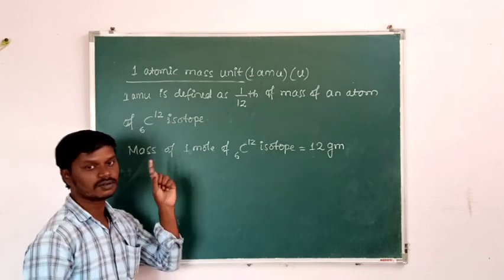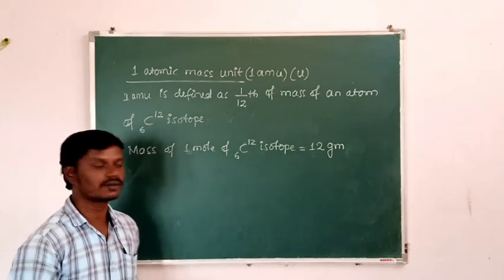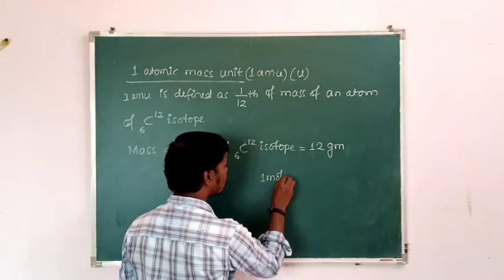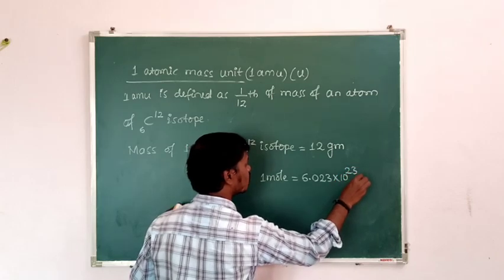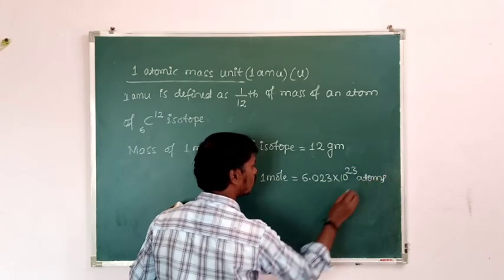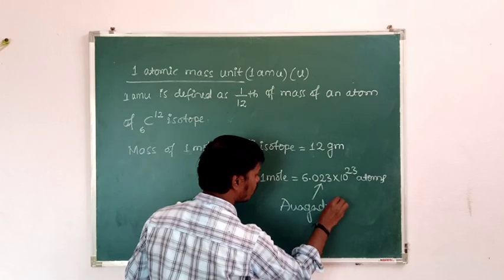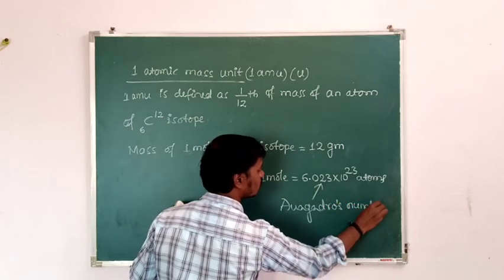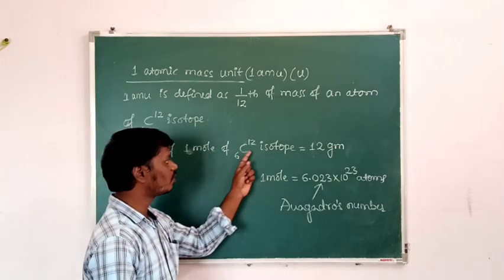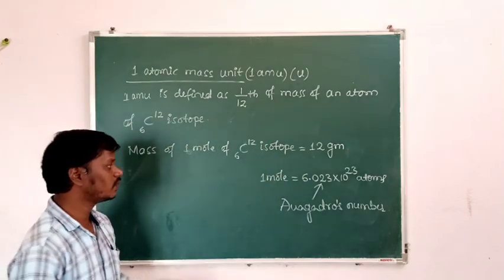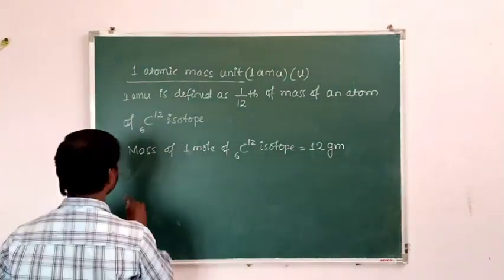One mole contains 6.023 × 10²³ atoms — that is called Avogadro's number. So the mass of 6.023 × 10²³ atoms of Carbon-12 isotope is 12 grams. We need to find the mass of one atom of Carbon-12 isotope.